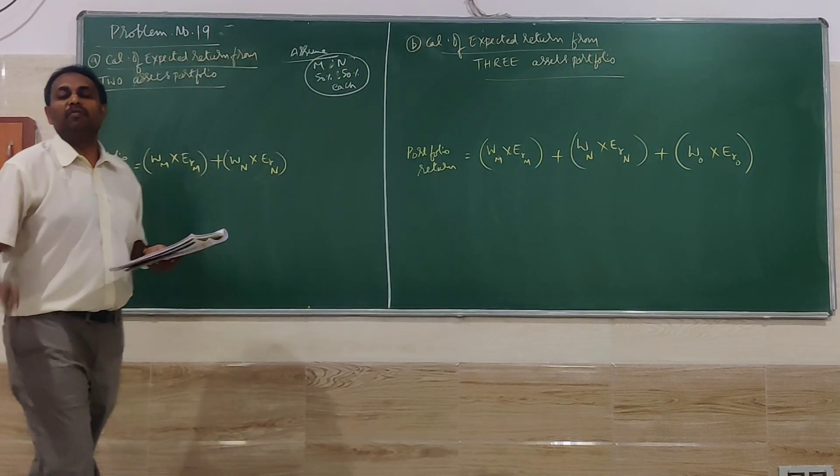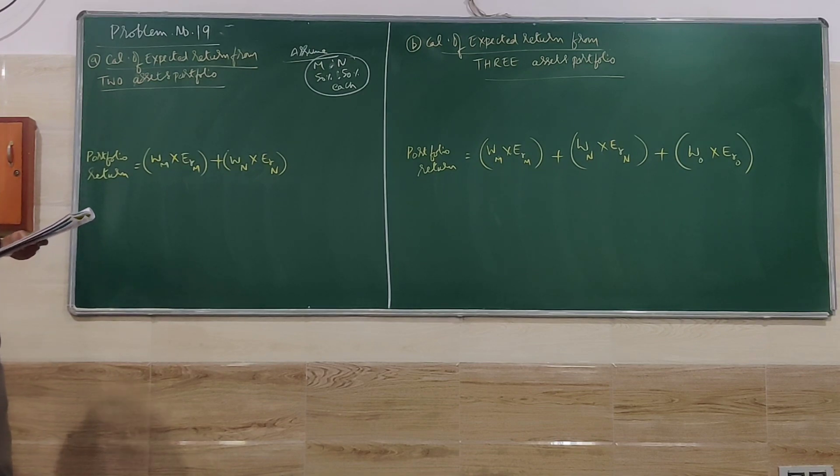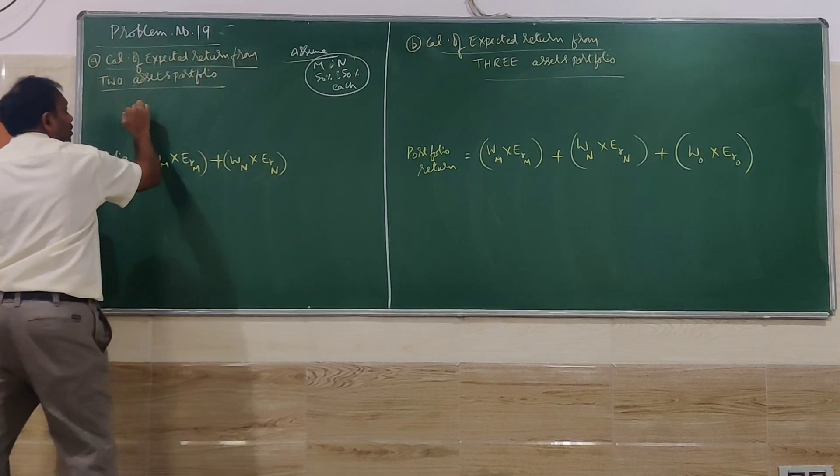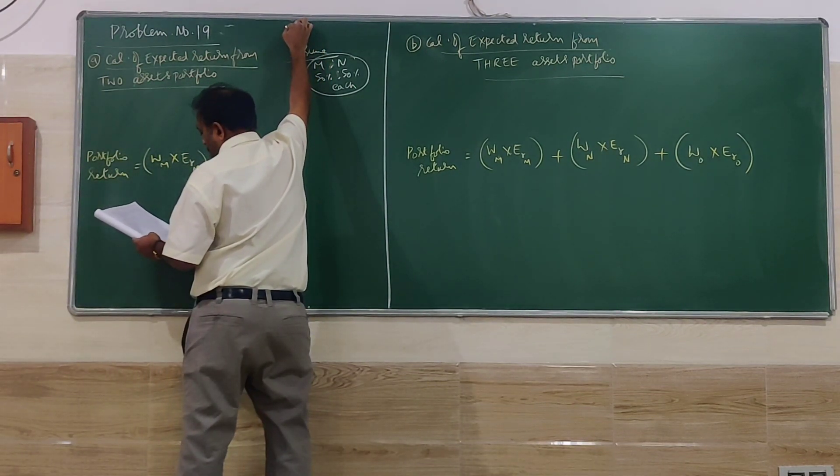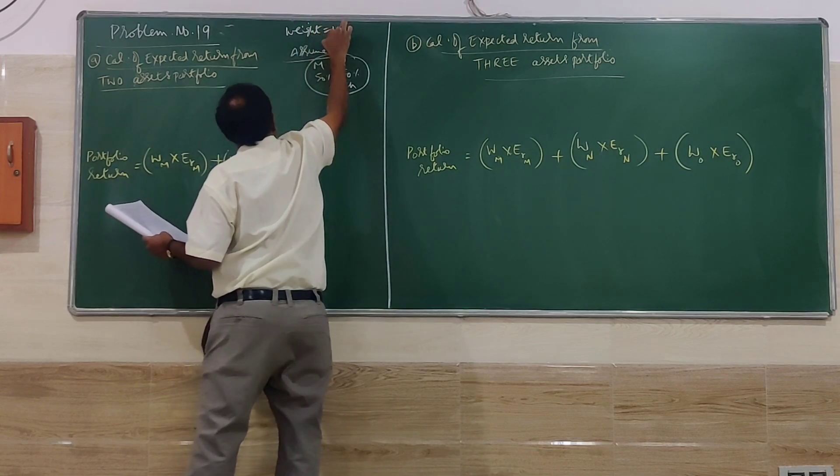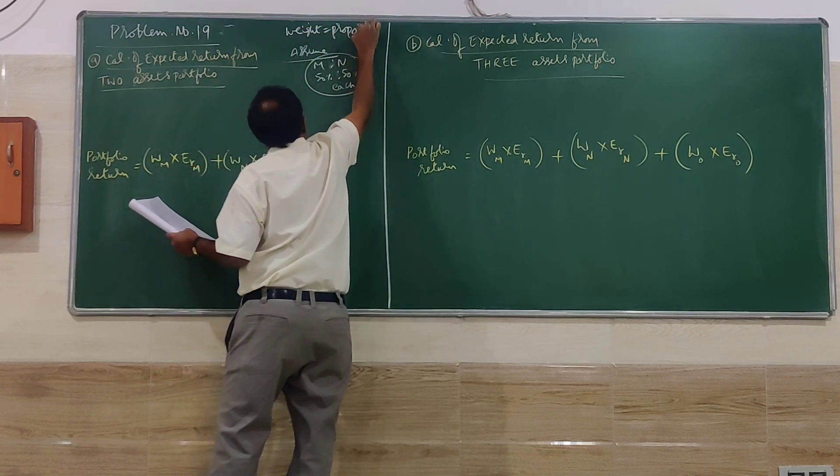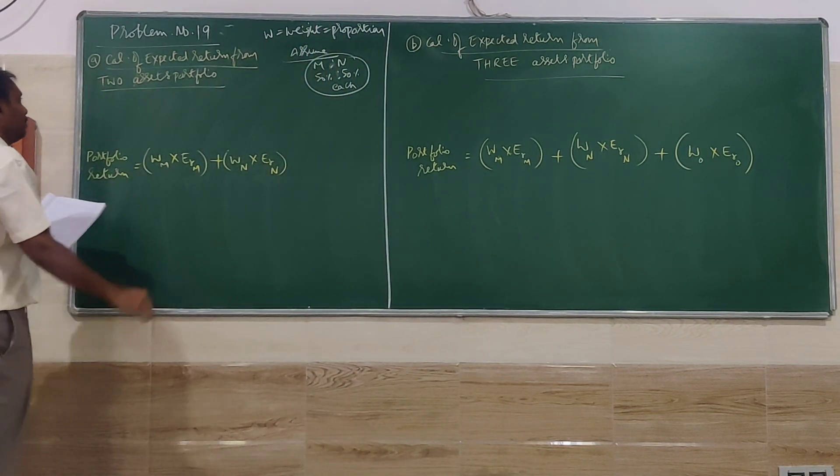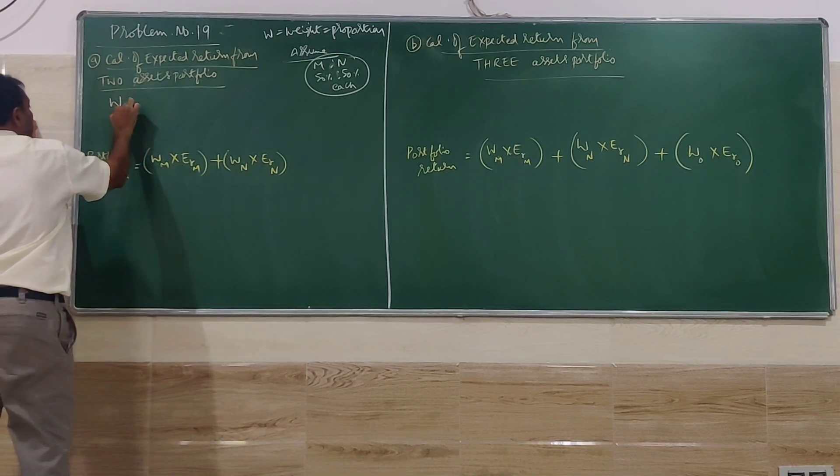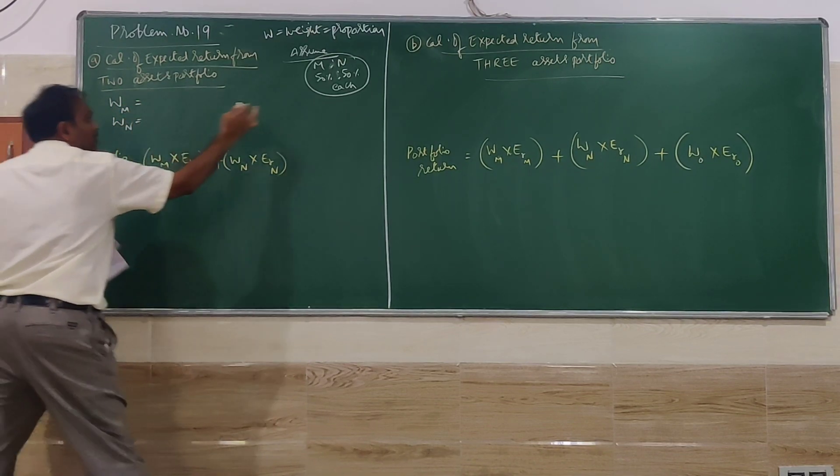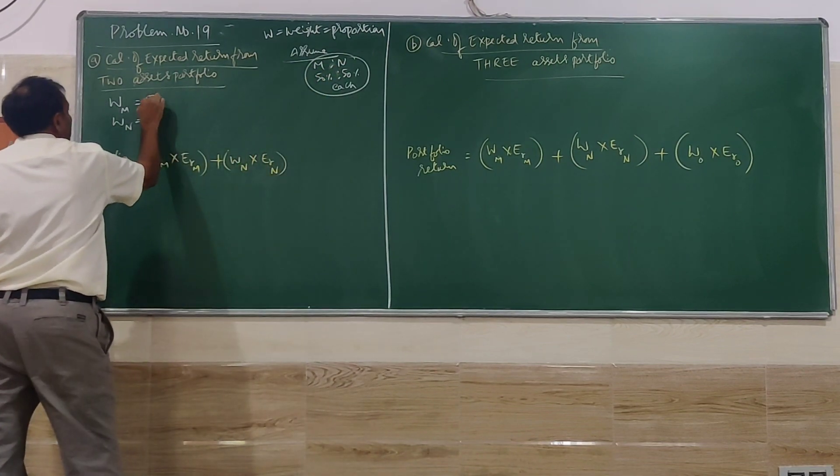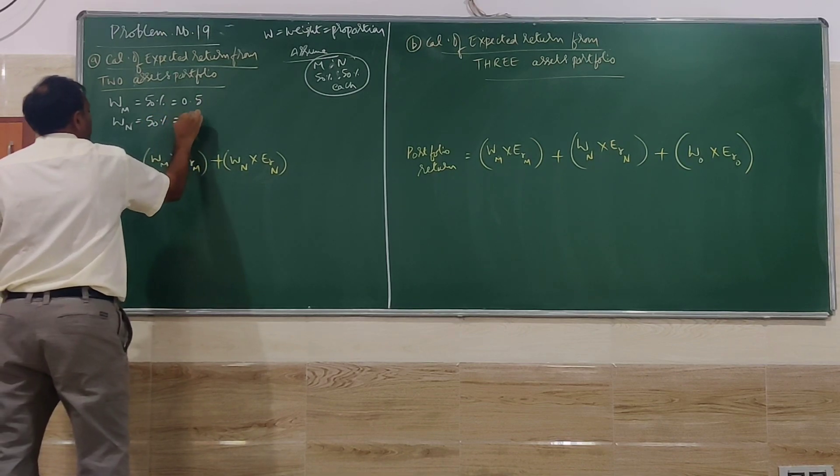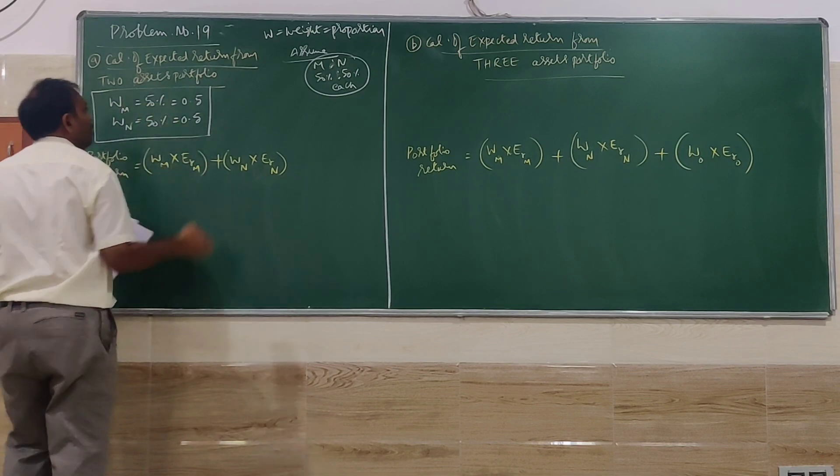The investment will be 50% each because they are investing in both. You have to remember that weight equals proportion. I have given here M and N, 50% each. So the weights will be 50%, 0.5.